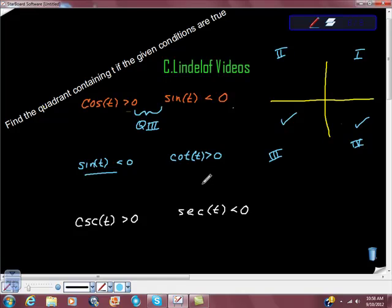Cotangent is greater than zero. Well, cotangent is y over—no, it's not. It's x over y. So they'd have to be either positive over positive, which is here. Let's do it in just a different color so we can see what I'm talking about here.